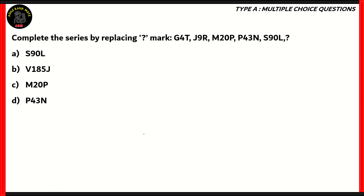Now let's look at a different type of question — basically completing the series. Complete the series by replacing the question mark. The series given is: G4T, J9R, M20P, P43N, S90L, and then the question mark. We need to find out what the next element in the series is going to be. This particular question is very easy — you can immediately guess that option B would be the right option.